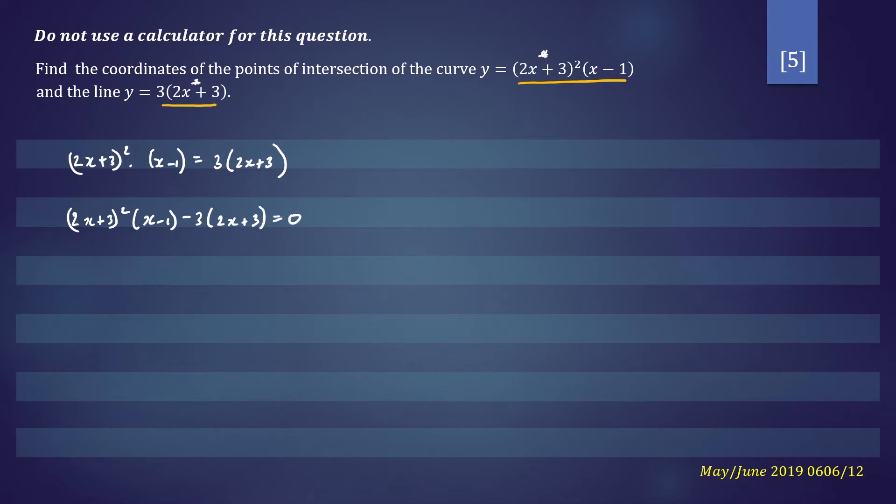And as you can see, we have a common factor here, 2x plus 3. So let's bring that to the front. We'll have 2x plus 3 bracket 2x plus 3 times x minus 1 minus 3 equals 0.